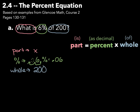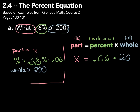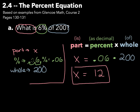As we make our substitution into the percent equation, our part we do not know — that is our x — and that equals our percentage as a decimal, 0.06, multiplied by our whole, which in this question is 200. Now I just need to multiply: x equals 0.06 times 200, which is 12. So 12 is 6% of 200.